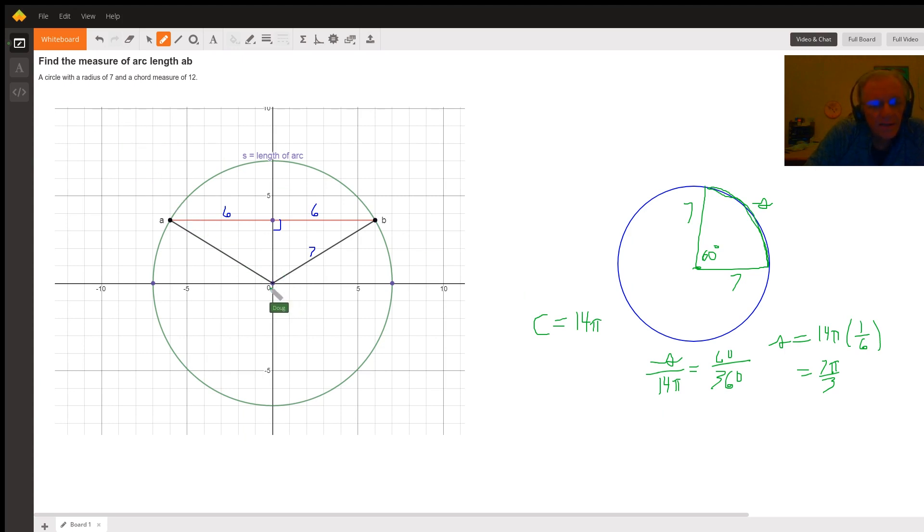What you have to understand is that if you have a chord of length 12, if you draw a radius that's perpendicular to that chord, and you could do that wherever the chord is drawn, you could draw a radius perpendicular to that chord. The radius bisects the chord, cuts it into two equal parts, and it's perpendicular.